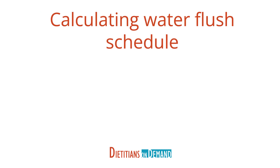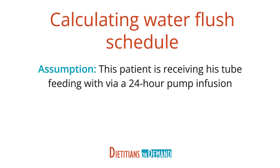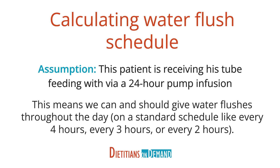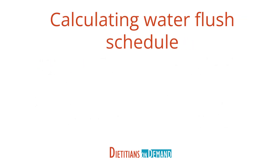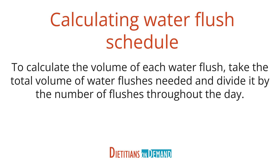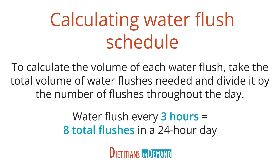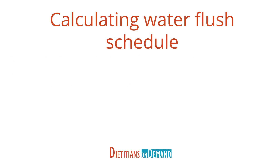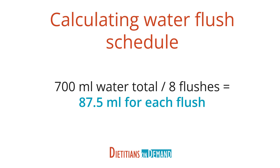Let's assume that this patient is receiving his tube feeding via a 24-hour pump infusion. This means we can and should give water flushes throughout the whole day. Water flushes are often given on a standard schedule like every four hours, every three hours, or every two hours. To calculate the volume of each water flush, take the total volume of water flushes needed and divide it by the number of flushes throughout the day. If we give a flush every three hours, that would be eight total flushes in a 24-hour day: 700 milliliters divided by eight flushes equals 87.5 milliliters for each flush.